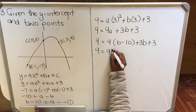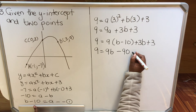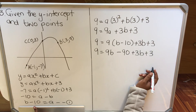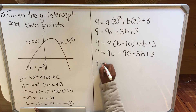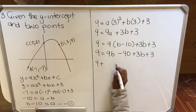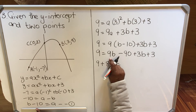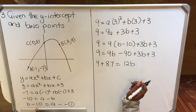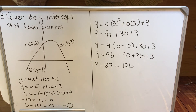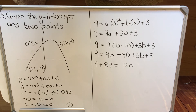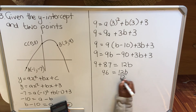Expanding: 9 = 9b - 90 + 3b + 3. Collecting b terms: 9b + 3b is 12b, and -90 + 3 is -87. So 9 = 12b - 87. Taking -87 to the other side: 9 + 87 = 12b, giving 96 = 12b. Dividing both sides by 12: b = 8.